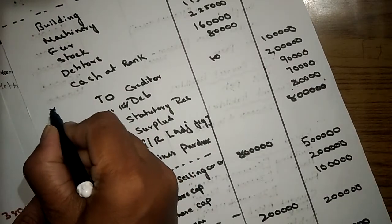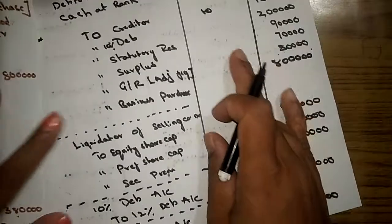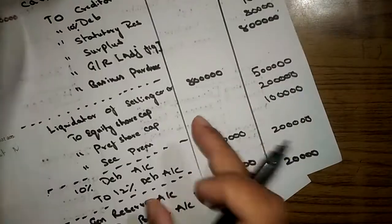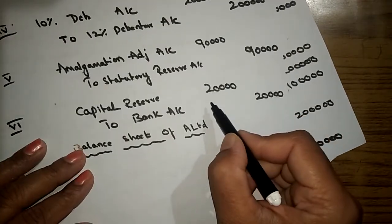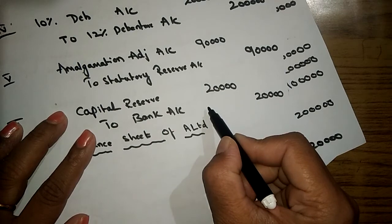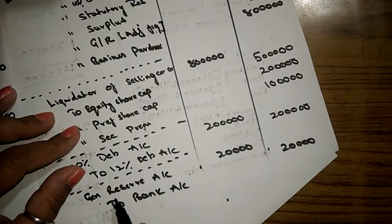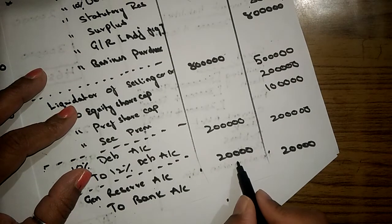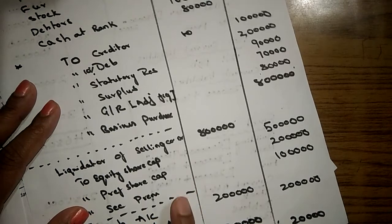The main difference you can see is in the second entry. The third and fourth entries are same in both methods. The last entry: in purchase method we are adjusting the realization expenses under capital reserve, and here in pooling interest method we are adjusting this into general reserve. The realization expenses should be adjusted into general reserve. As of now this journal entry part is over. Let's do a balance sheet, then we will finish the whole chapter.